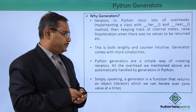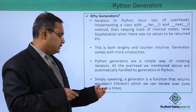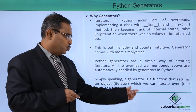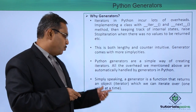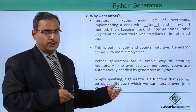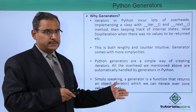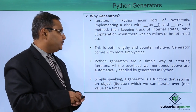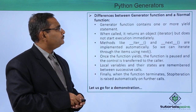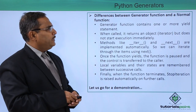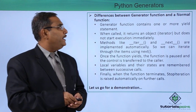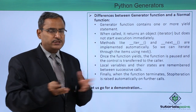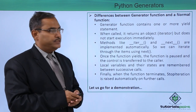Simply speaking, a generator is a function that returns an object — an iterator object — which we can iterate over one value at a time. This is the simplest way to handle the respective iterator object. Now let's look at the difference between a generator function and a normal function.